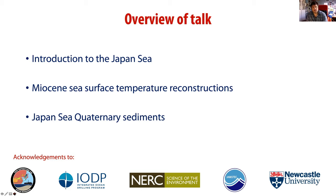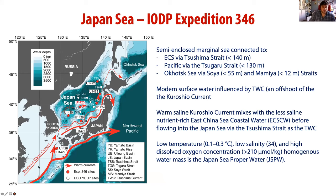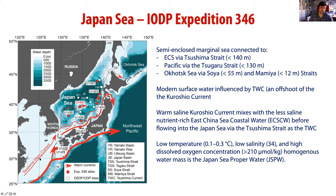Here is a map of the Japan Sea. It has a deep basin to the north, and the numbers refer to different sites drilled during our expedition. I'm going to focus particularly on U1425 and U1427. It's effectively a semi-enclosed marginal sea connected to the East China Sea via the Tsushima Strait. The Tsushima Warm Current flows along the coast of Japan, bringing relatively warm, nutrient-rich waters into the Japan Sea. The main current hugs the coastline of Honshu, the main island of Japan.